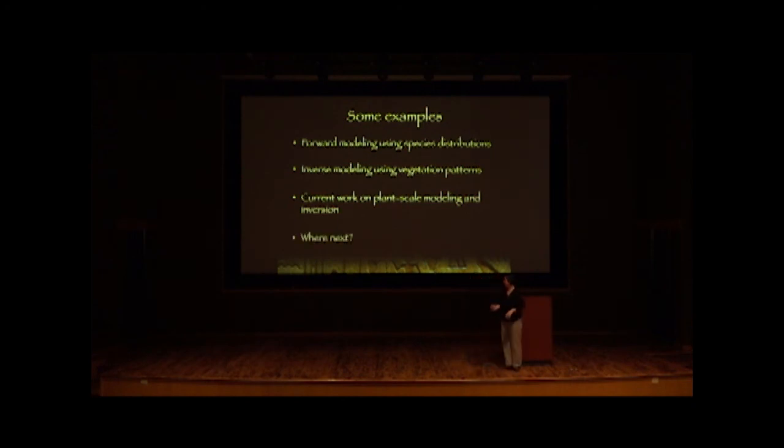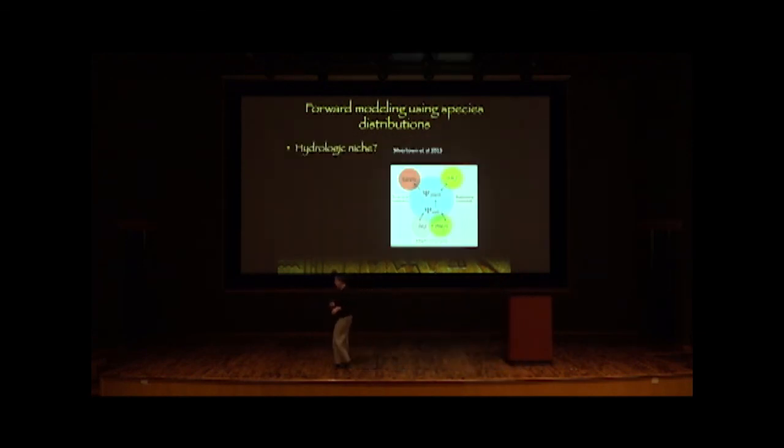And then I'll very briefly touch on some stuff that's just starting to get going, which I think really speaks more to this idea of plants, the individual plant organism as a potential sensor. But it's highly preliminary and you'll really just see some very, very early work. So that's where we're heading. And of course there'll be some high-level faff at the end. Okie dokie. So, example one, forward modelling using species distributions.